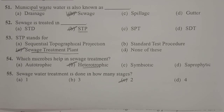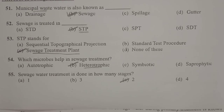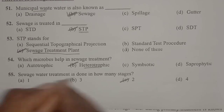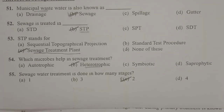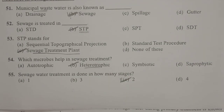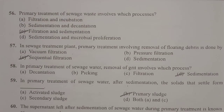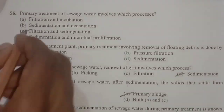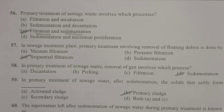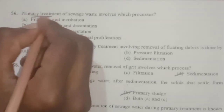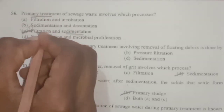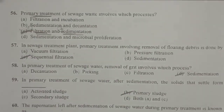Next: sewage water treatment is done in how many stages? There are two steps: primary treatment and secondary treatment, also called physical treatment and biological treatment. During primary treatment, there are two steps: filtration followed by sedimentation.